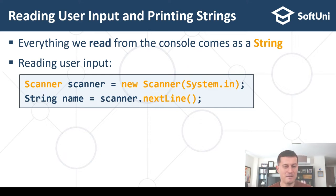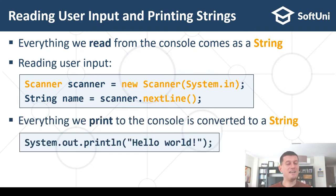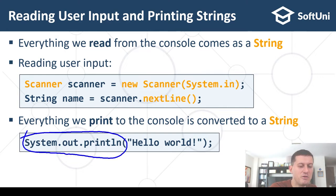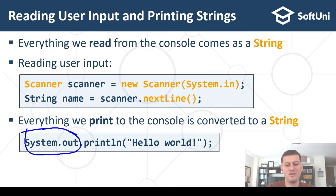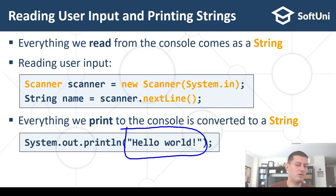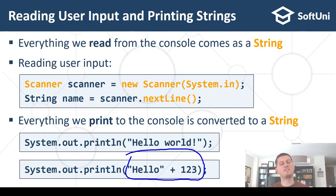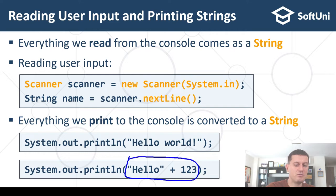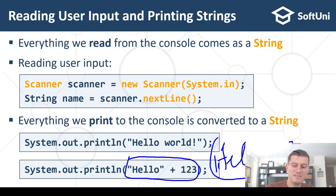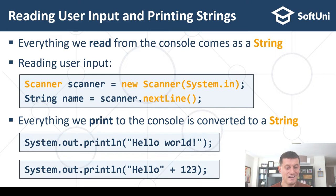I'll show you in a moment when I start IntelliJ IDEA and use Java code to demonstrate this in more detail. As a concept, everything we print to the console is converted to a string first — which means you can freely print with System.out.println any text, such as 'Hello World'. If we want to print numbers, they are first converted to strings. For example, 'Hello' plus 123 becomes the string 'Hello123' and then is printed.